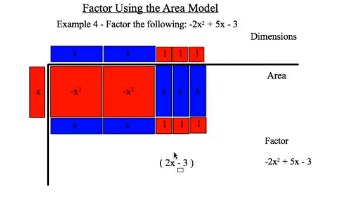So my top dimension is shaping up to be 2x - 3. Now to get a positive x on the bottom, I need to multiply this row by positive 1. Just checking: 1 times x is x, 1 times negative 1 is 1. Looks like I've got a nice match here.